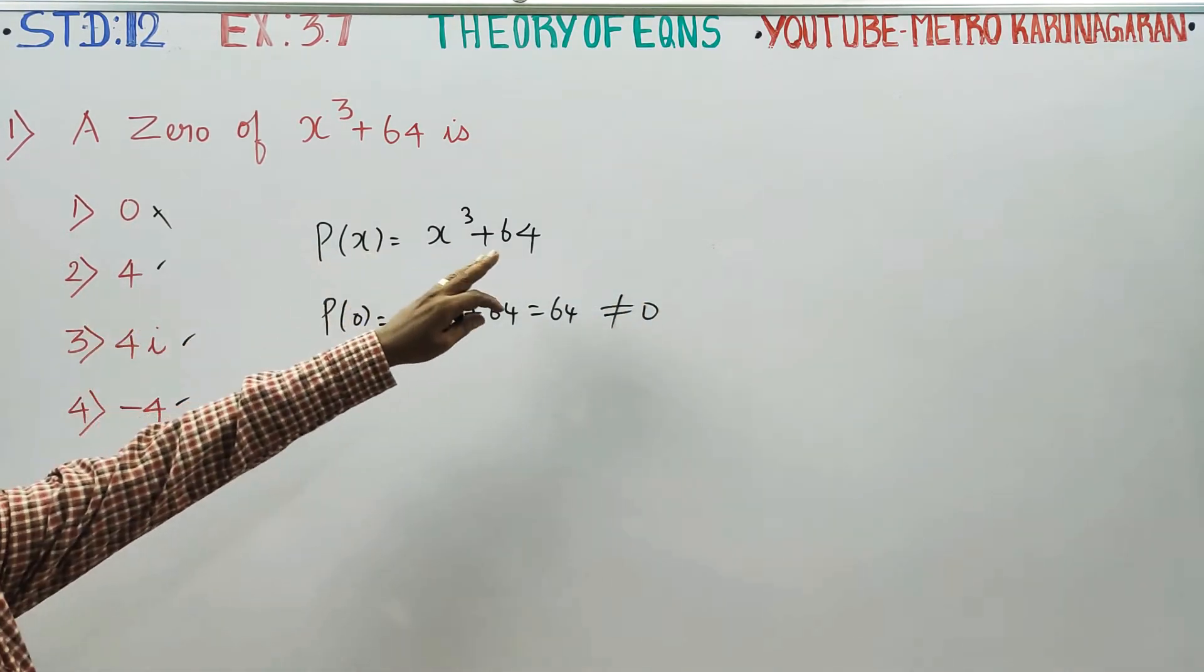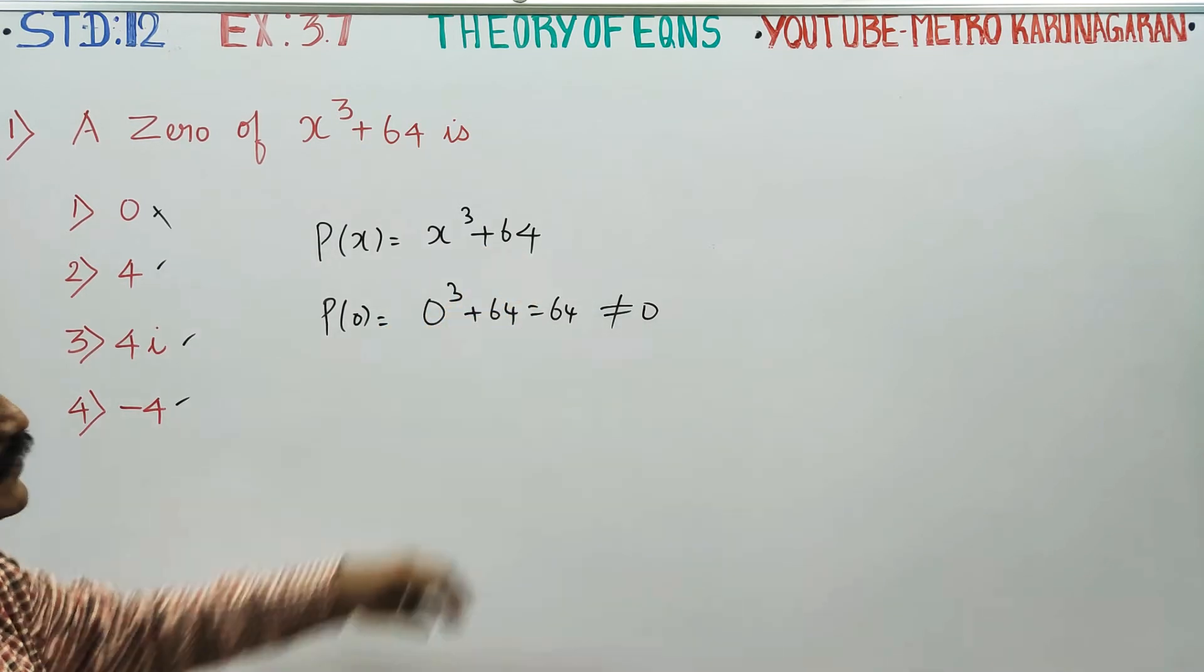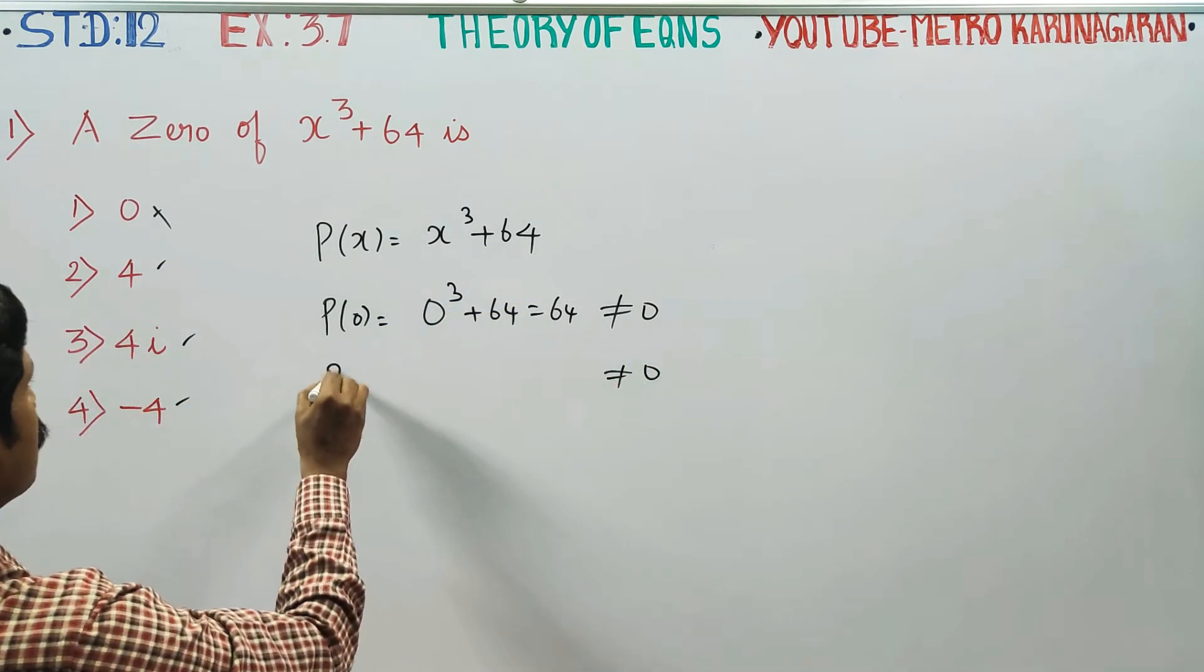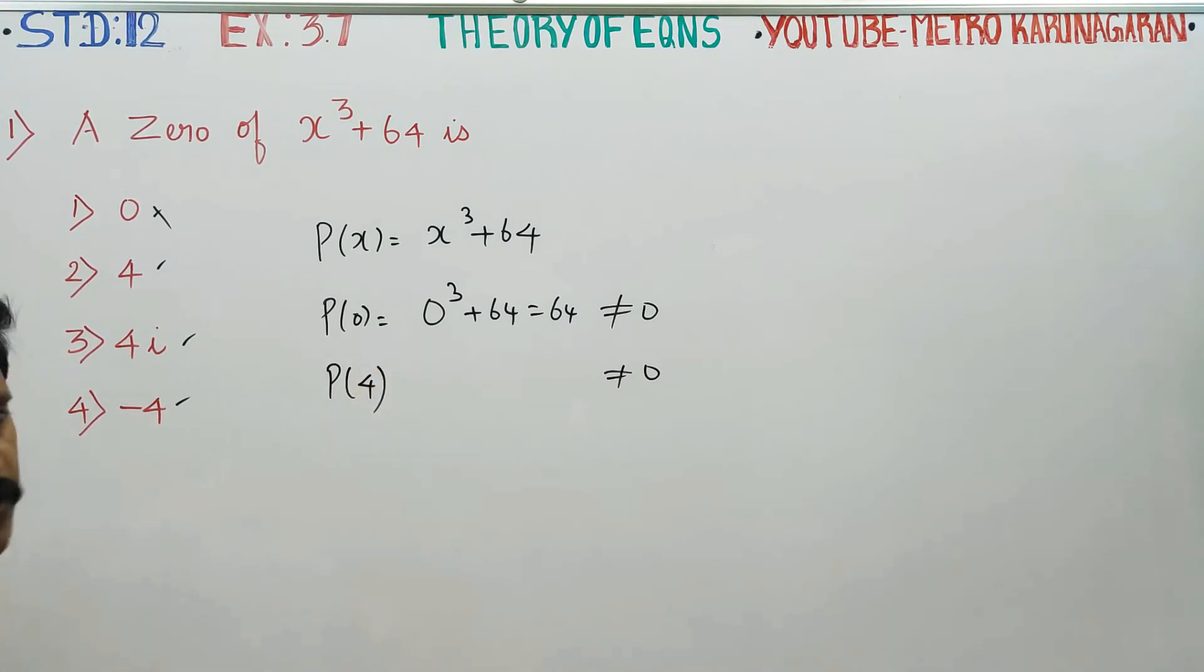4 put together: 4³ is 64, and 64 + 64 is 128. It is also not equal to 0. Therefore, P(4) is not the answer.